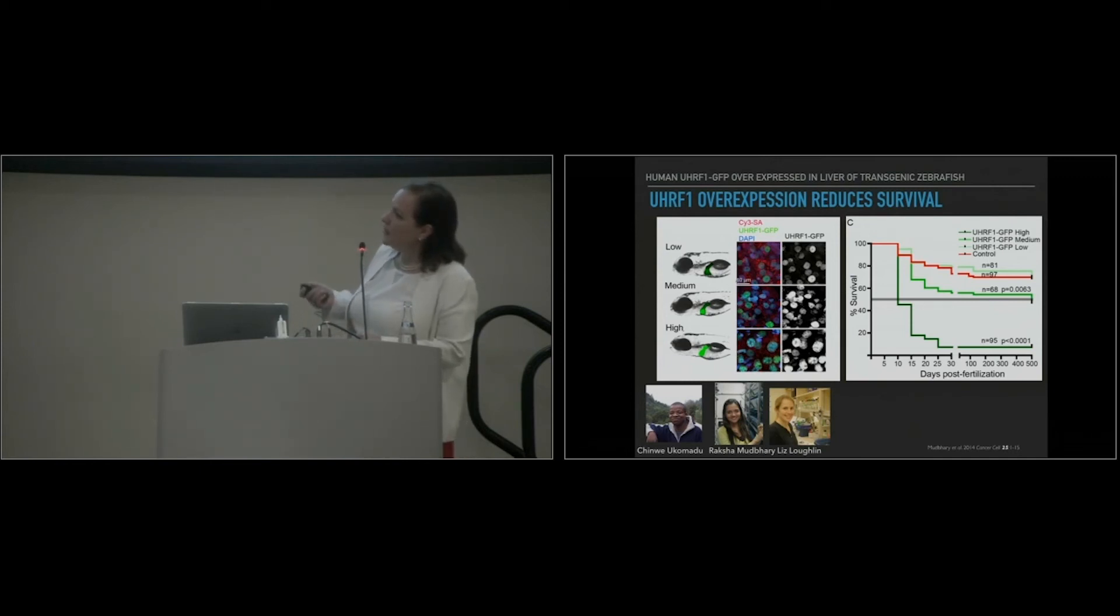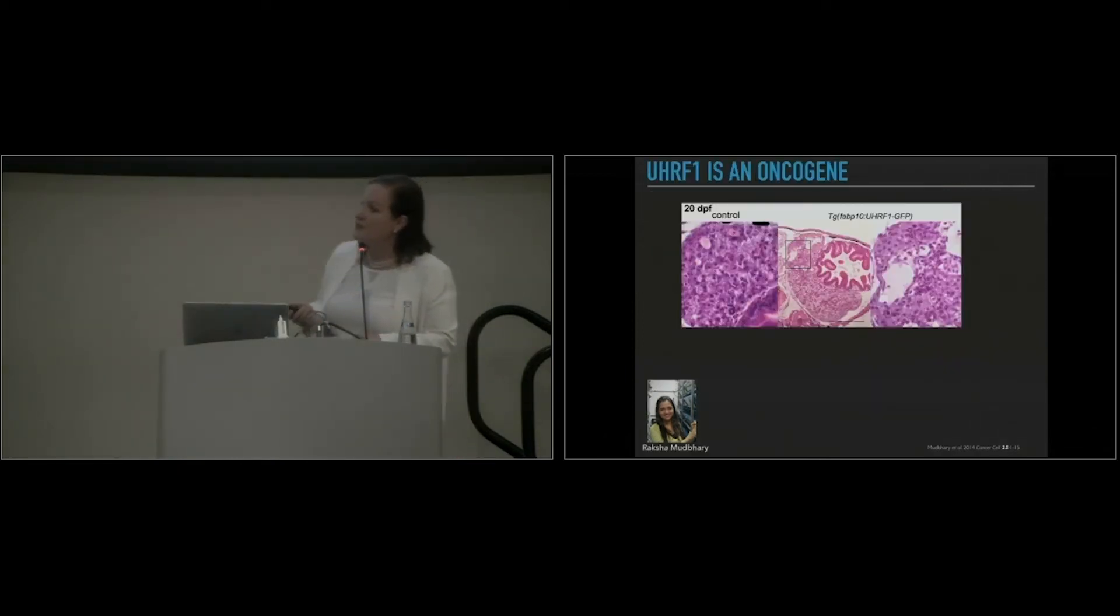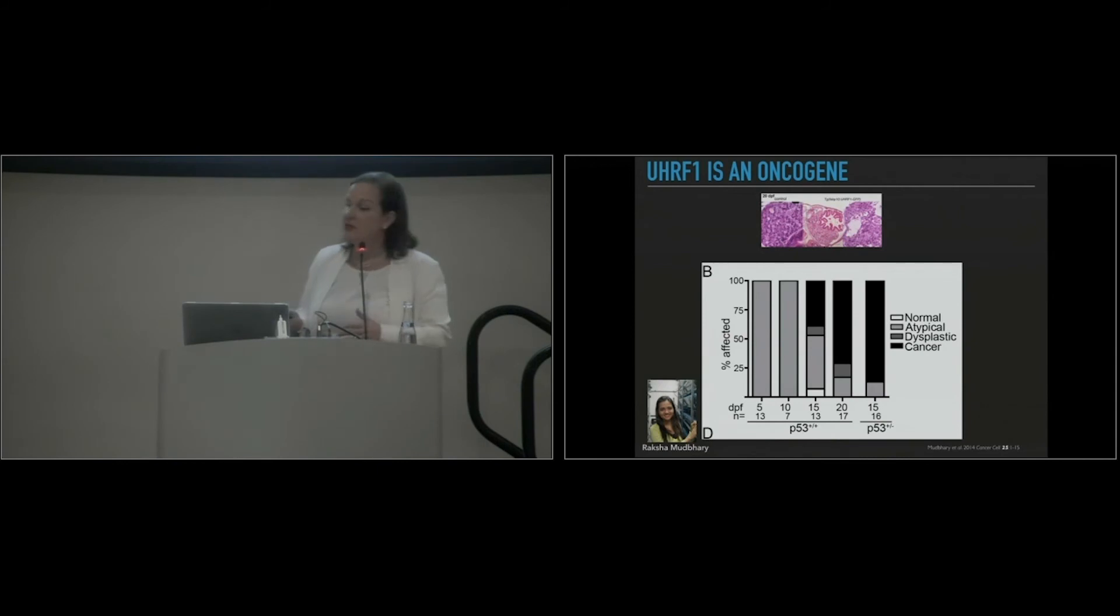The way that we address this using zebrafish is we made a zebrafish that has lots of UHRF1 expressed in its liver cells. We creatively named them low, medium, and high to reflect the level of expression that we have. What you can see is that the ones that express high levels have very low survival at very early on. This is 20 to 30 days. So we wanted to take a look. Raksha in the lab wanted to take a look and see what was going on there. What she found, much to our amazement, was that these fish were getting cancer. When we did the counting, so we as scientists, we love to count. In zebrafish studies, you can count big numbers. What you see is that by the time these fish are 15 days old, about 30% of them have liver cancer. Five days later, it's up to more like 70%. With this finding, we were really the first to say that this gene is an oncogene, which means a cancer-causing gene.